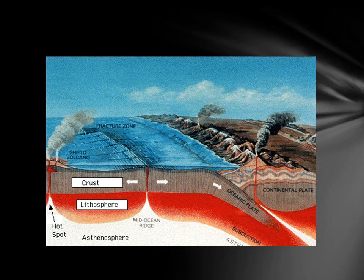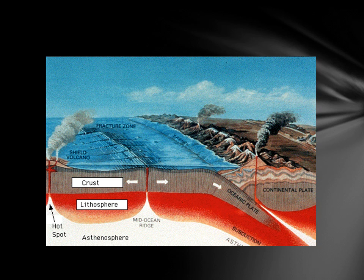To end with a larger view of seafloor spreading: we have our mid-ocean ridge with magma coming up, cooling, hardening, and new ocean floor forming and moving outward in both directions. Where the oceanic crust gets pushed under the continental crust, we call this process subduction, and we call that area a subduction zone. That's your crash course in tectonics — a good way to start this unit — and we'll be moving next into faults and earthquakes, so stay tuned.